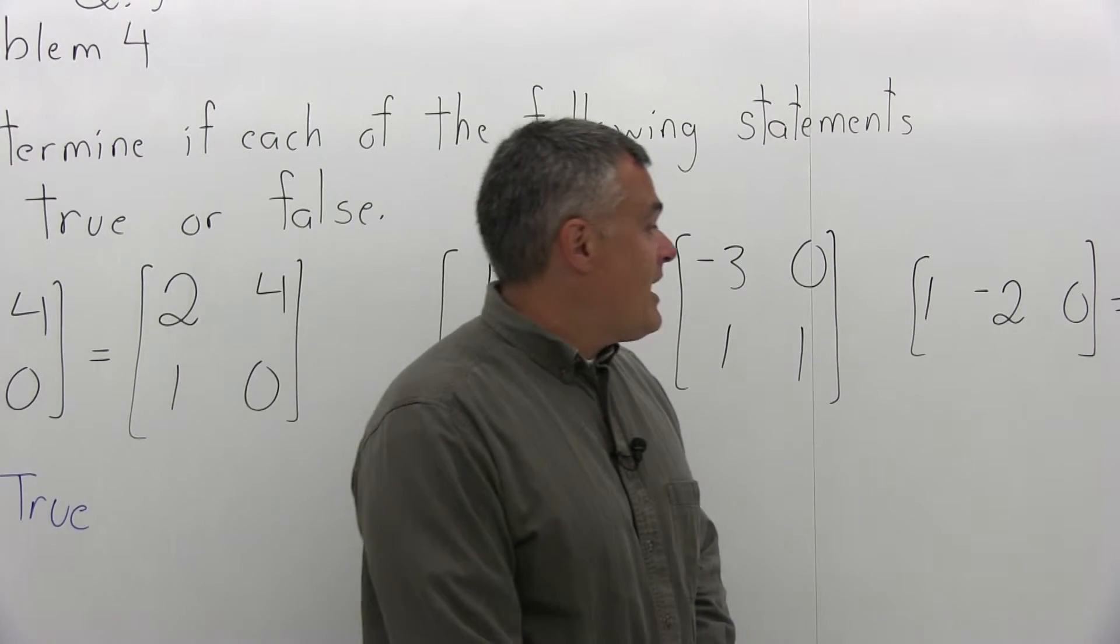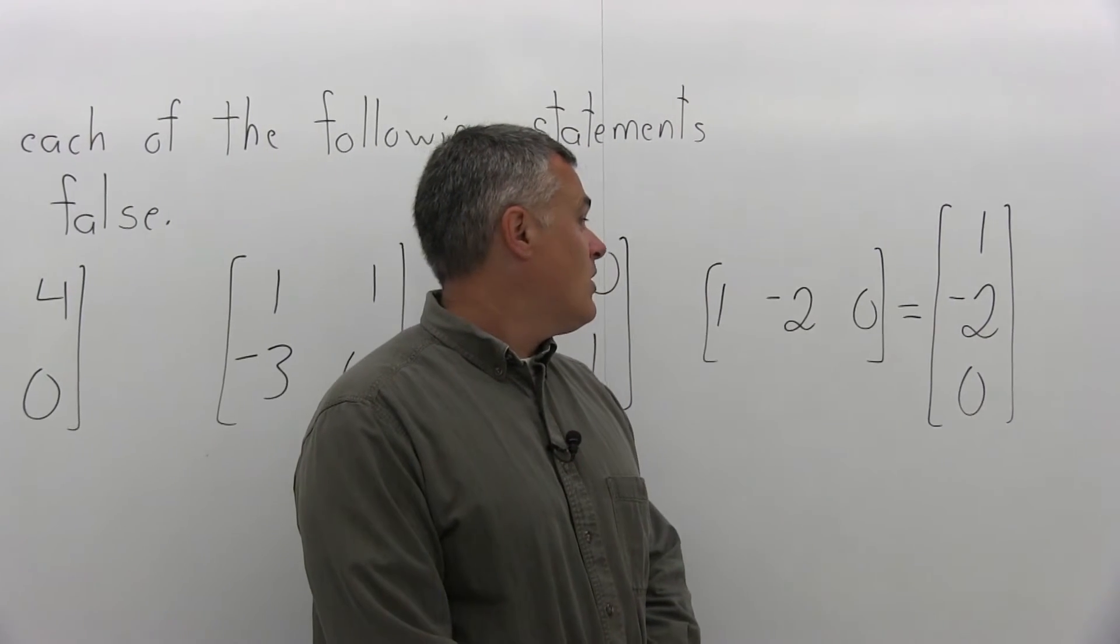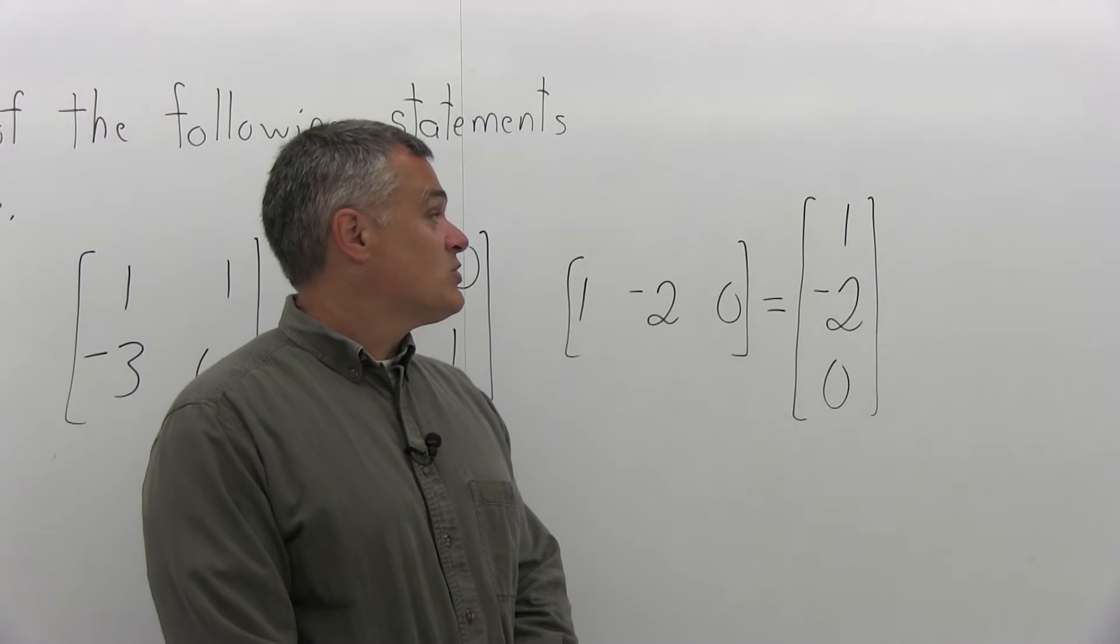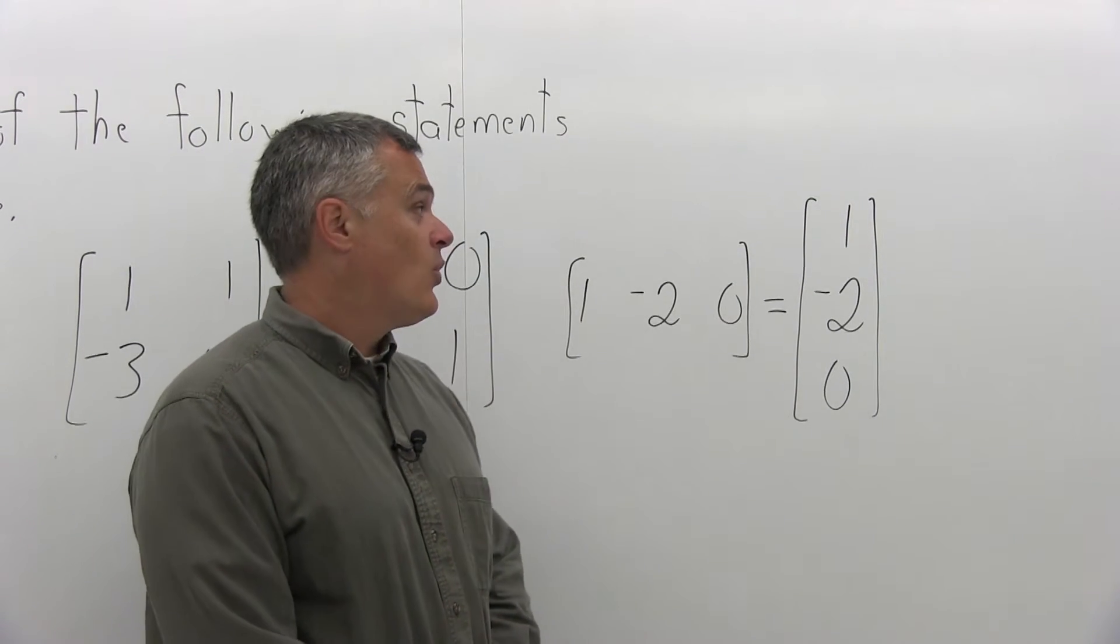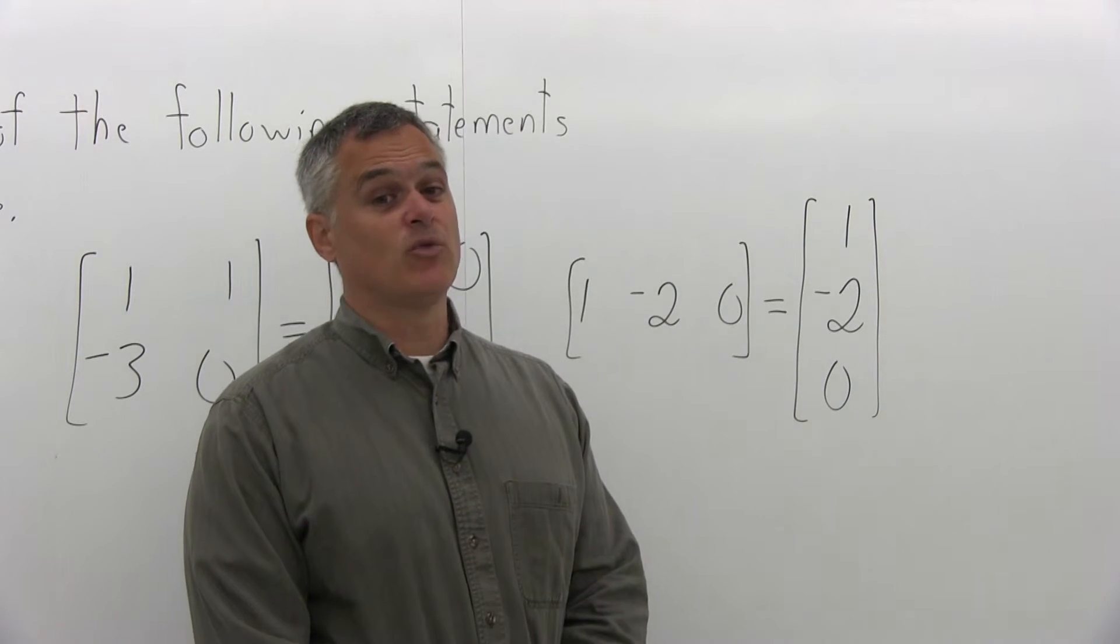And finally, the last statement: true or false? You have a matrix with one row—that one row being [1, -2, 0]—is equal to the matrix with one column: [1, -2, 0]. That would mean it has three separate rows of one element.